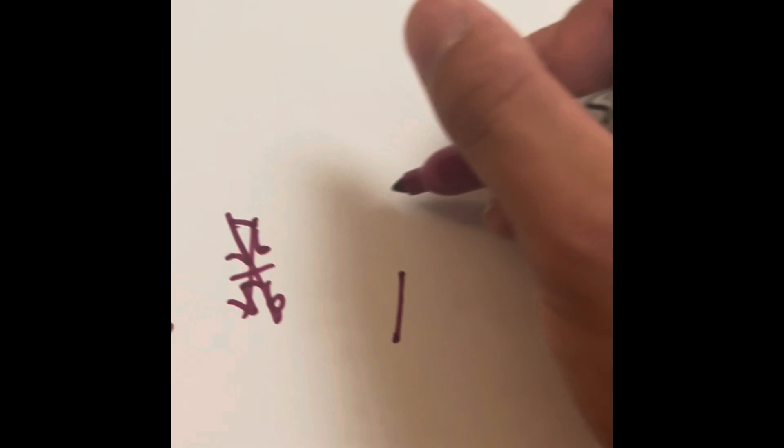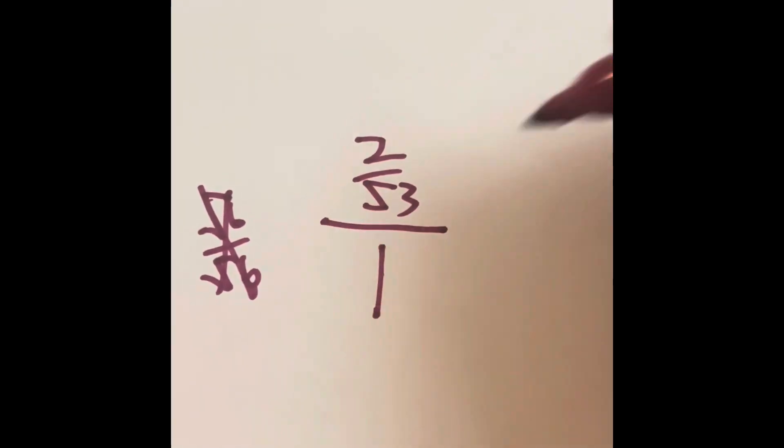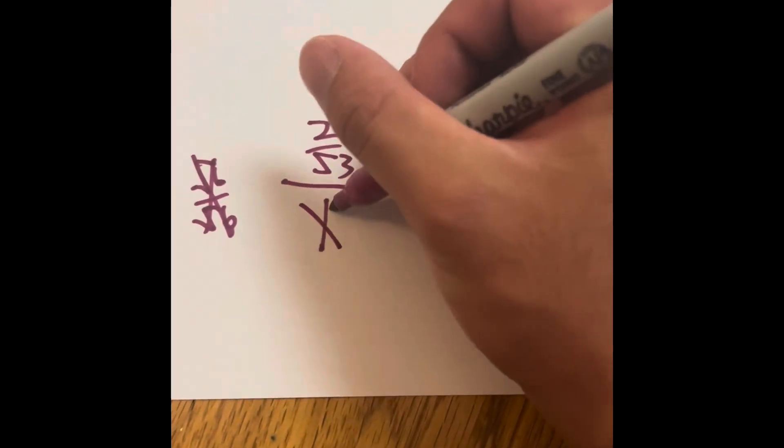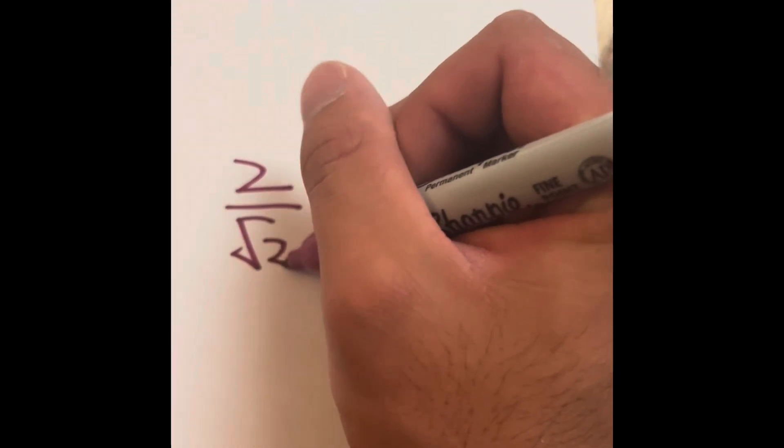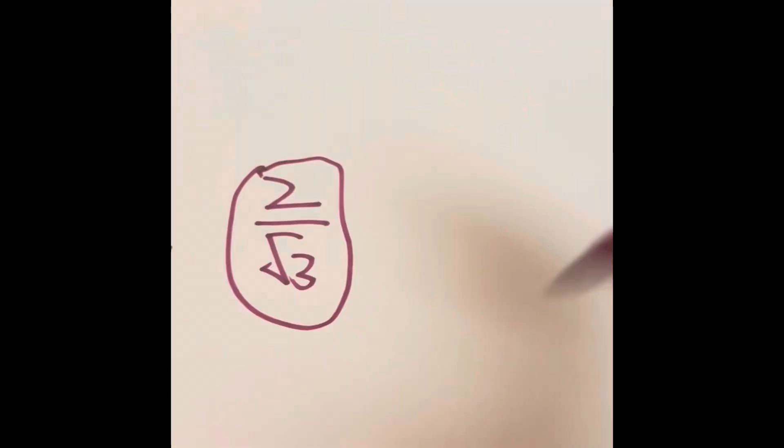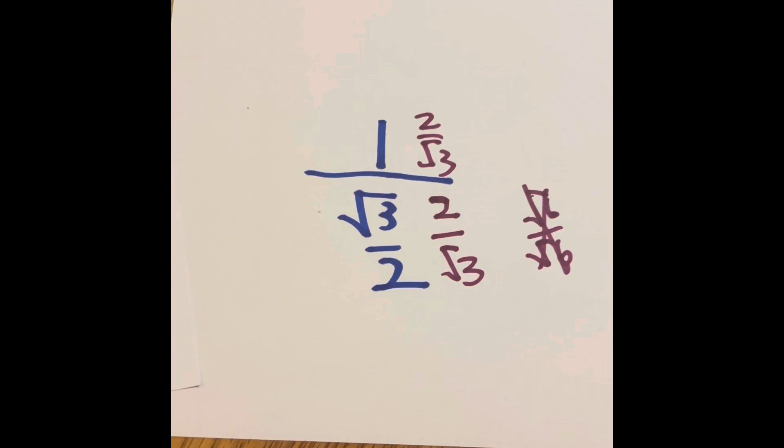But when we multiply 2 over radical 3, we'll literally have 2 over radical 3 divided by 1. We can get rid of the number 1, and our final answer is 2 over radical 3 in this case scenario. So yeah! It's still a fraction, but at least it's not a complex fraction.